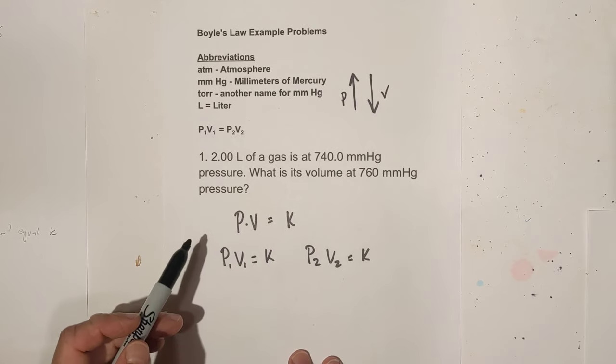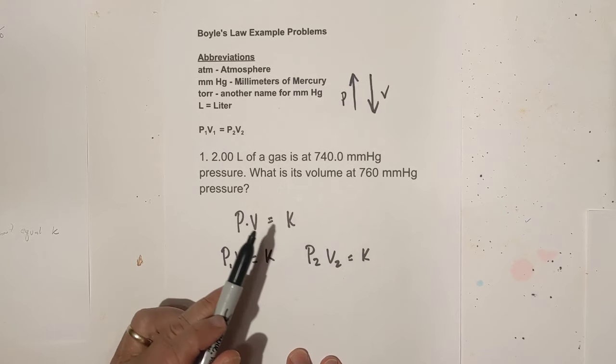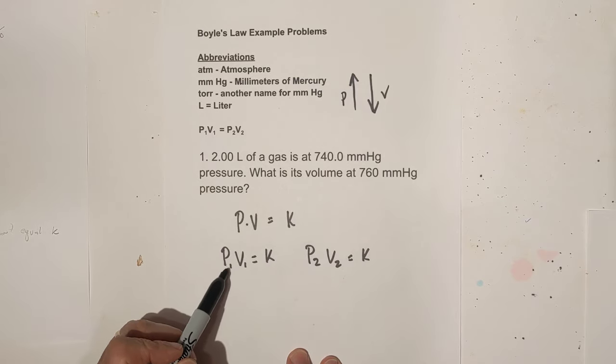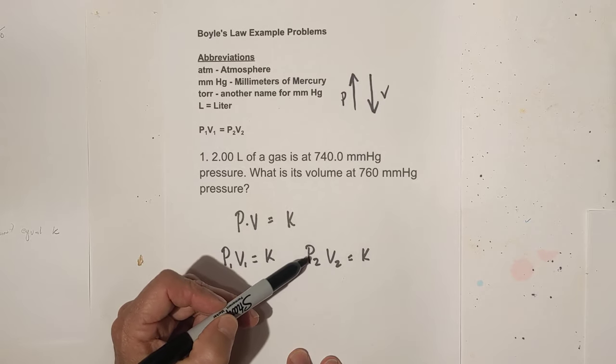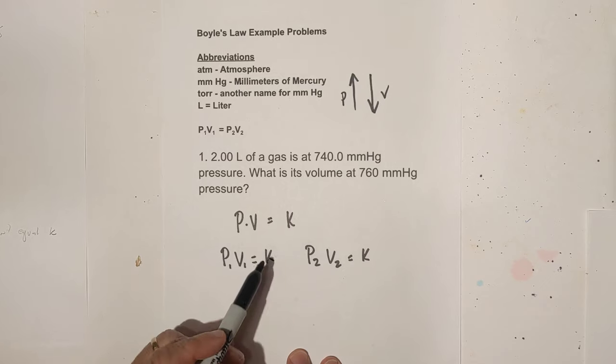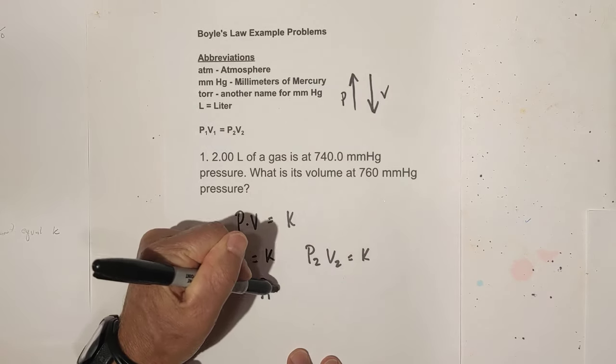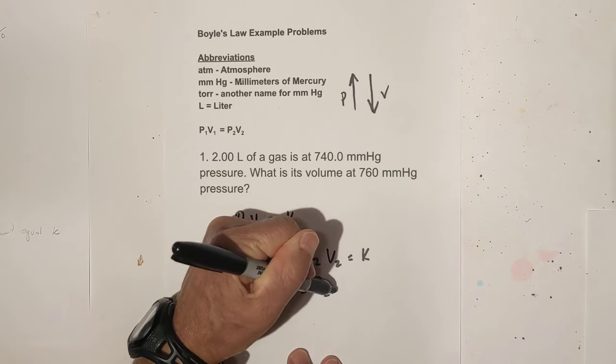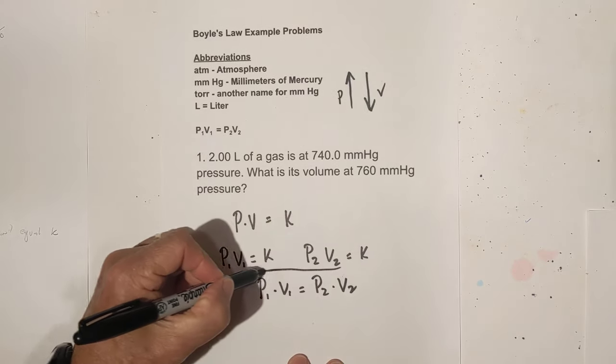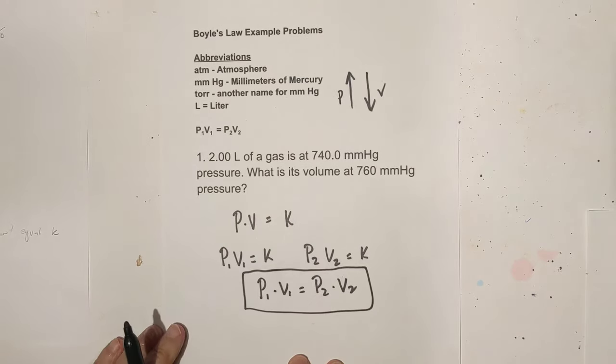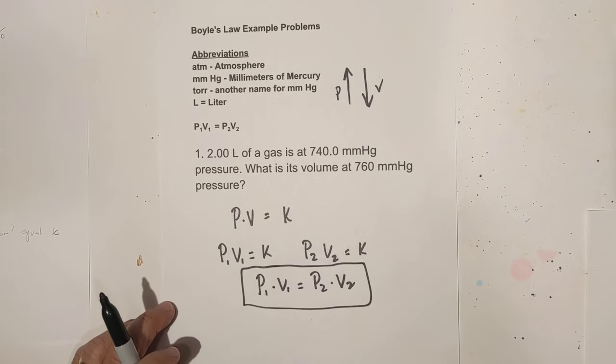A lot of times with Boyle's law, you're comparing things, so you have a before and an after. The before would be P1 times V1 equals K, and then the second, or the afterwards, would be P2 times V2. So what you can do, since they're both set to K, you can just set it to P1 times V1 equals P2 times V2. So for all the problems we're getting ready to work, you can use this formula. Then all you do is just plug and figure out the answer.